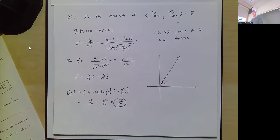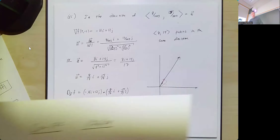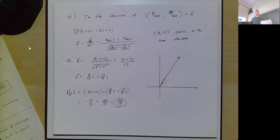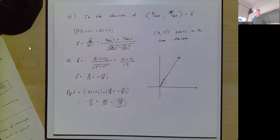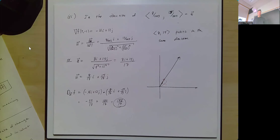Let's talk about the gradient. This is really all there is to directional derivatives: find the gradient at the point, find the direction as a unit vector by dividing by its magnitude, then dot them together. Whatever number you get is the slope — positive means going up, negative means going down, zero means traveling along a level curve.